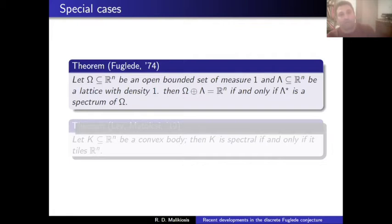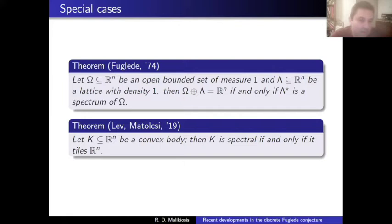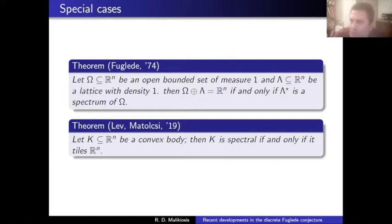Fuglede believed this is true for every Ω — regardless of whether the tiling complement or the spectrum needs to have this nice geometric property. For special classes of sets, for example convex bodies, this was proven very recently by Levin and Matolcsi: if K is a convex body, K satisfies Fuglede's conjecture. There were numerous positive results in this direction with restrictions on the convex body (e.g., dimension), but this was completely proven recently. For the first 30 years after the conjecture's statement, we had only special cases.